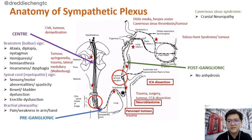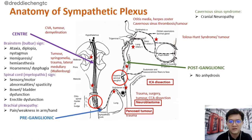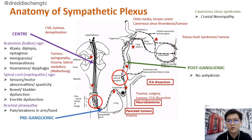Bear in mind, for postganglionic neuron lesions, usually they don't have anhydrosis. This is because the supply to the sweat glands is via the sudomotor and vasoconstrictor fibers to the face, and when the lesion is postganglionic, most of the time it spares those fibers. Hence, a patient with a third-order neuron lesion does not have anhydrosis. Also, if a patient has a cavernous sinus syndrome, they can also have extraocular muscle movement problems because of cranial neuropathy, as several cranial nerves pass through the cavernous sinus.